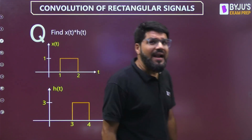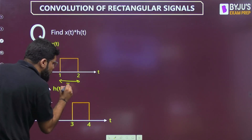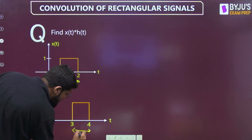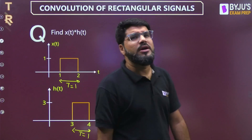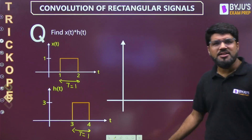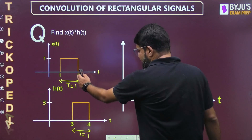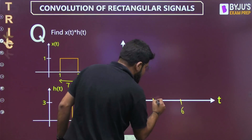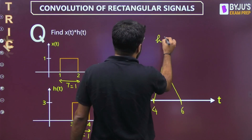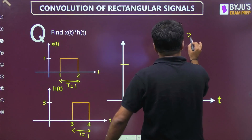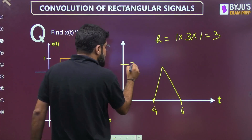Rectangles can be placed anywhere, not necessarily centered at the origin — what matters is the duration. Here the first rectangle spans 1 to 2 (duration 1) and the second spans 3 to 4 (duration 1), so equal duration and the answer is a triangle. The triangle starts at 1+3=4 and ends at 2+4=6, so it is centered at 5. The height is A1 × A2 × T = 1 × 3 × 1 = 3.